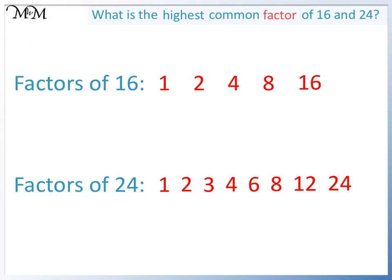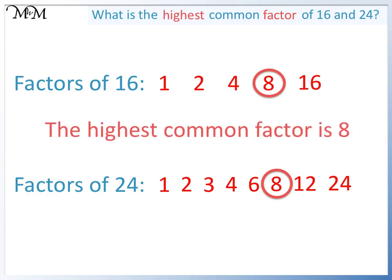Now we have the factors, we are asked to find the highest number that is in both lists. 8 is the biggest number in both lists. So the highest common factor is 8.